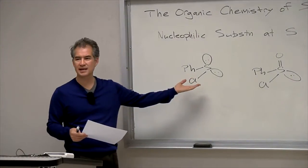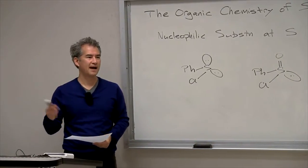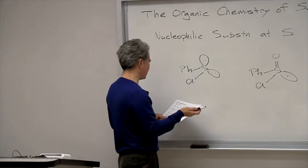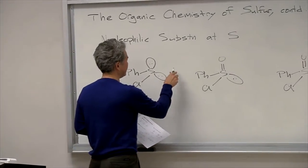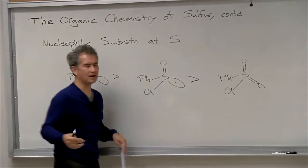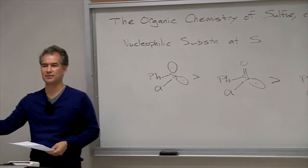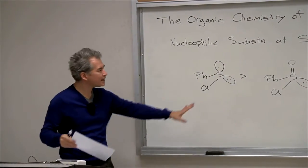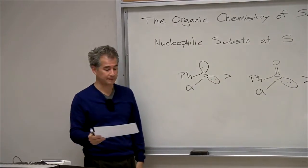Of course, in this case, chloride would be the group that substitutes the fastest. We're talking about rates of substitution of the chlorine atom in these cases. And the lower the oxidation state, the faster you will substitute. Or conversely, the more of those oxo ligands you have on there, the slower you will substitute.